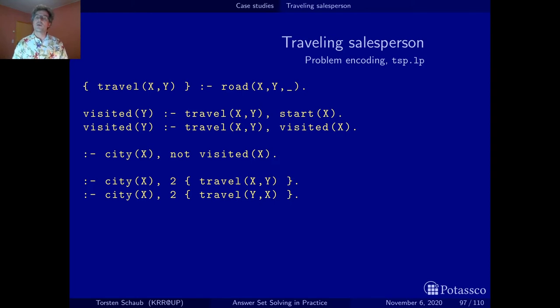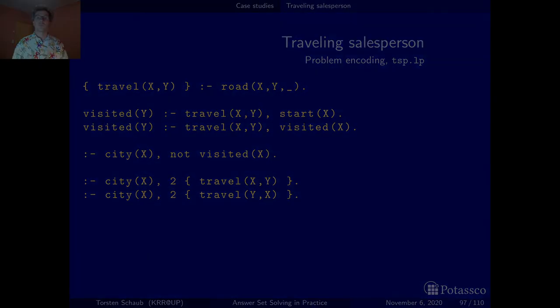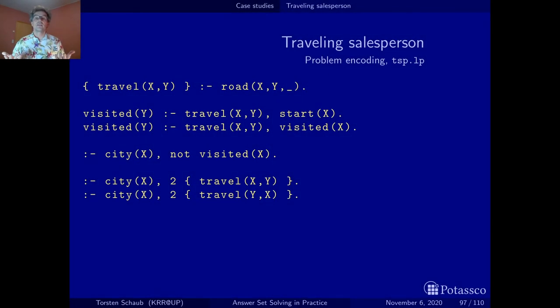Now how can we make sure that no node was visited twice? And this is done with the last two rules. The idea is simply to eliminate solution candidates in which you leave a city twice and in the second case to forbid situations where you arrive at a city twice.